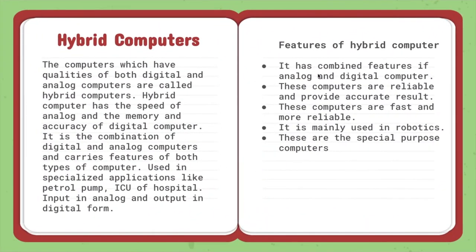The third type of computer is hybrid computers. Computers which have qualities of both digital and analog computers are known as hybrid computers. Hybrid computers have the speed of analog computers and the memory and accuracy of digital computers. It is the combination of digital and analog computers and is used in specialized applications like petrol pumps and ICU or hospital settings. Input is in analog form and output is in digital form.